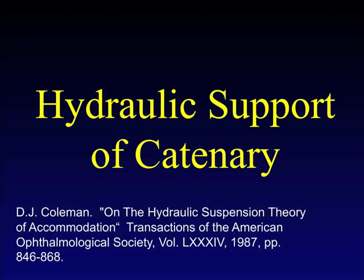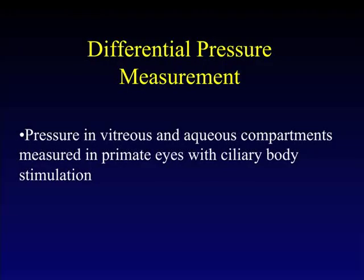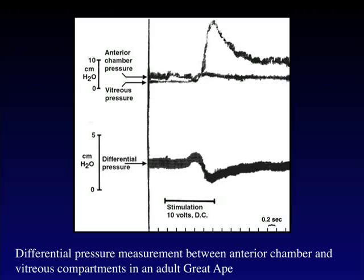A little bit more on hydraulic suspension — this was a 1987 paper in the Transactions of the American Ophthalmological Society discussing the hydraulic suspension: the vitreous, working with the zonule and lens, produces accommodation. At one point there was a question of whether the vitreous pressure really changed, and we measured vitreous pressure gradient directly in an adult-grade ape. We were able to show that initially there is a vitreous pressure rise followed by an aqueous pressure spike, and then both return quickly to baseline. The key point is that if there is an increased pressure in the vitreous, this precipitates and initiates the change in the lens.